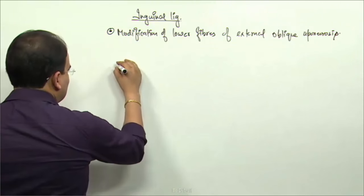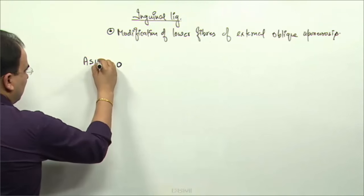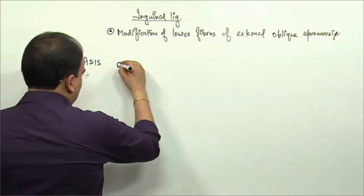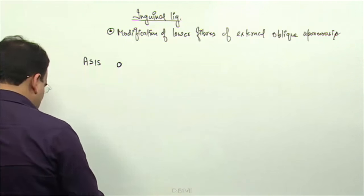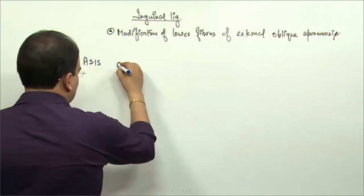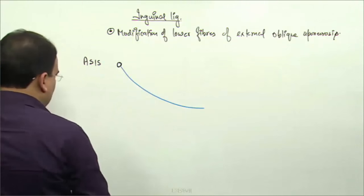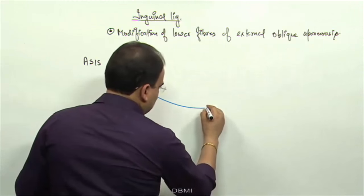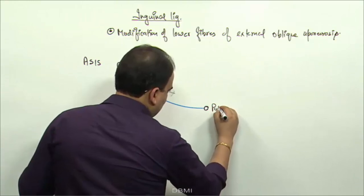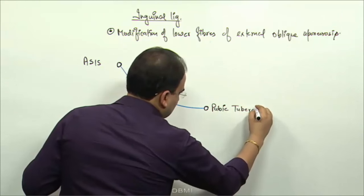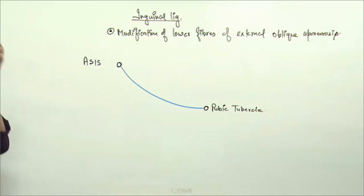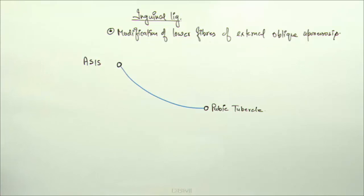If this is the ASIS - that is the anterior superior iliac spine - and there we have the pubic tubercle, then between them this is the inguinal ligament. So between the pubic tubercle and ASIS, this is the inguinal ligament.